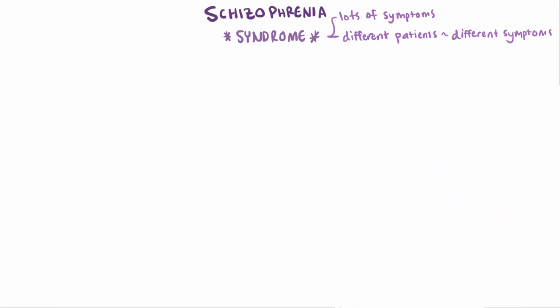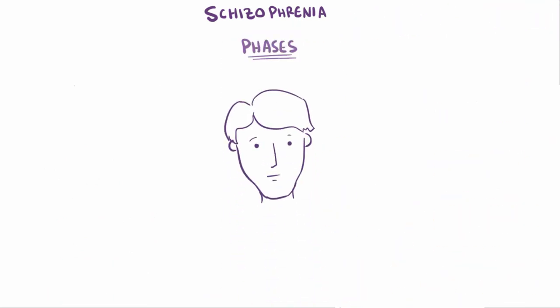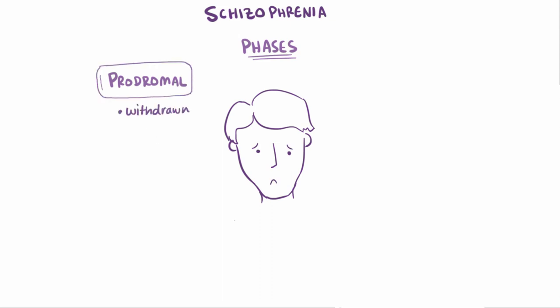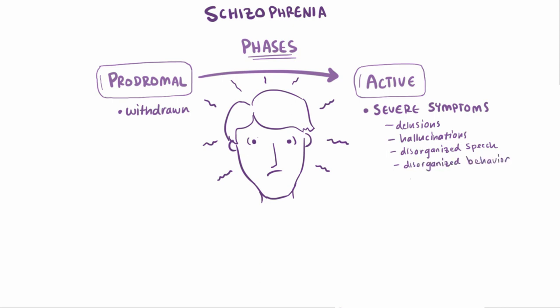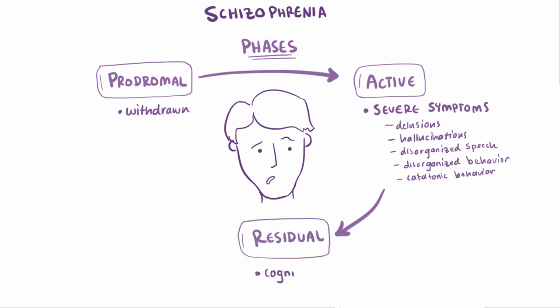People with schizophrenia seem to cycle through three phases, typically in order. During the prodromal phase, patients might become withdrawn and spend most of their time alone, and this often seems similar to other mental disorders like depression or anxiety. During the active phase, patients experience more severe symptoms like delusions, hallucinations, disorganized speech, disorganized behavior, or catatonic behavior. Following an active phase, patients often enter a residual phase, where they might exhibit cognitive symptoms like difficulty concentrating or becoming withdrawn again, as with the prodromal phase.